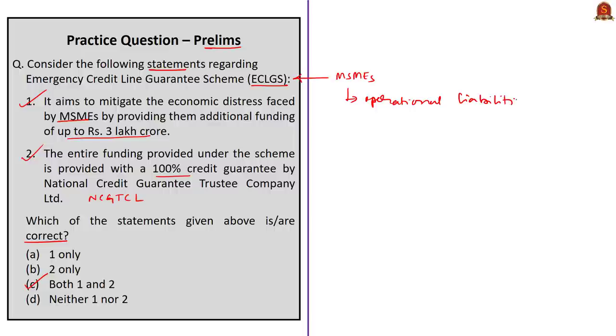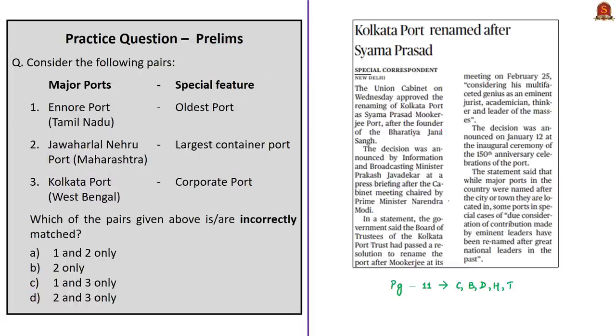The correct answer for the ECLGS question is option C — both statements 1 and 2 are correct. The ECLGS is expected to enable MSMEs to meet their operational liabilities, restart their business activities, and have a positive impact on the economy.